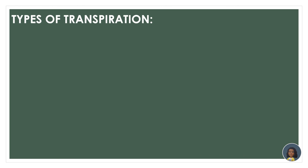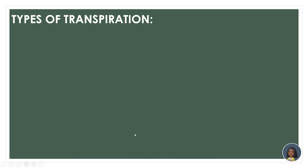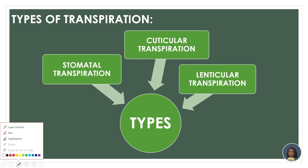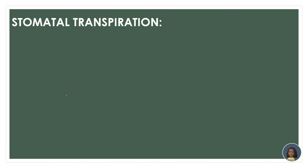Now let us look into the types of transpiration. There are basically three types: the first type is stomatal transpiration, the second type is cuticular transpiration, and the third type is lenticular transpiration. In today's video we will get a clear idea of stomatal transpiration, and in part two we will discuss the mechanism of the guard cells.